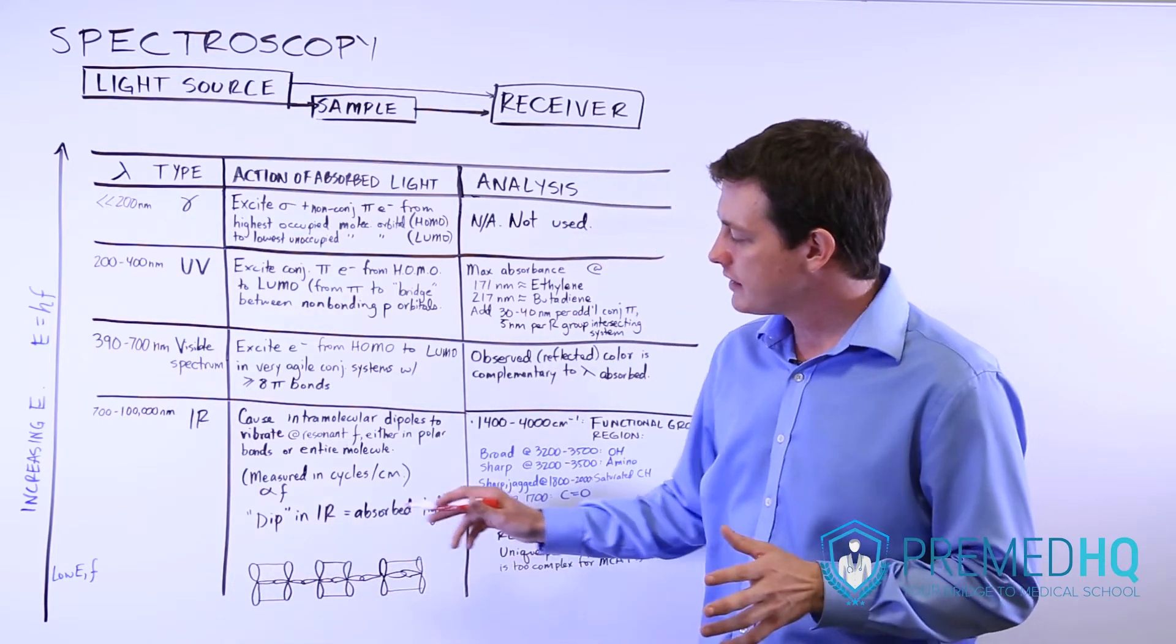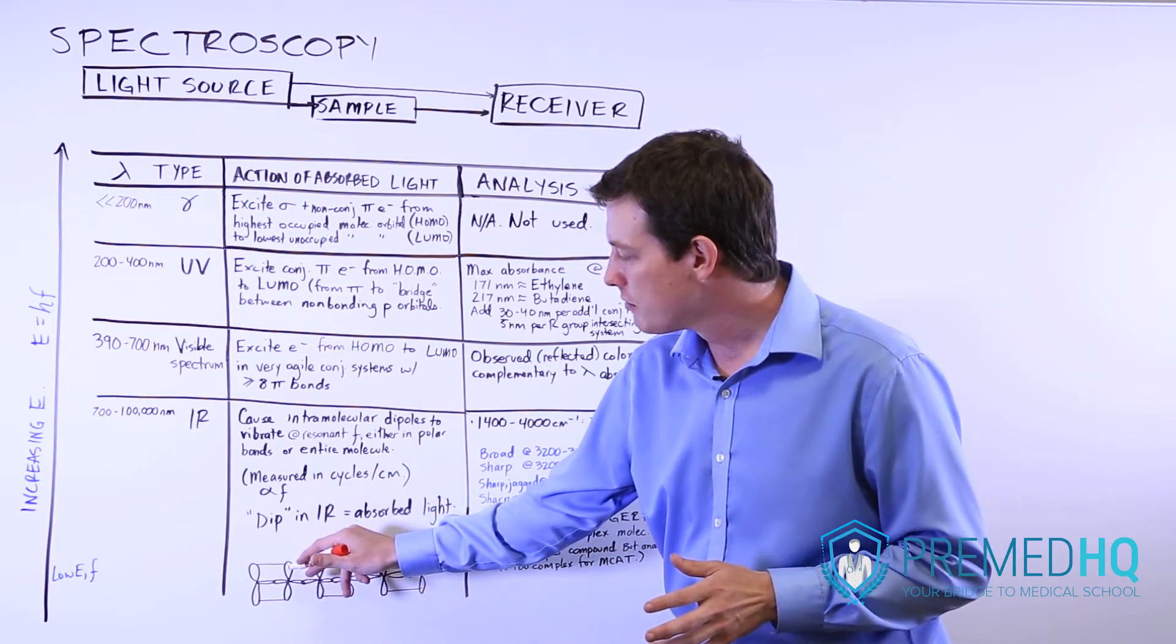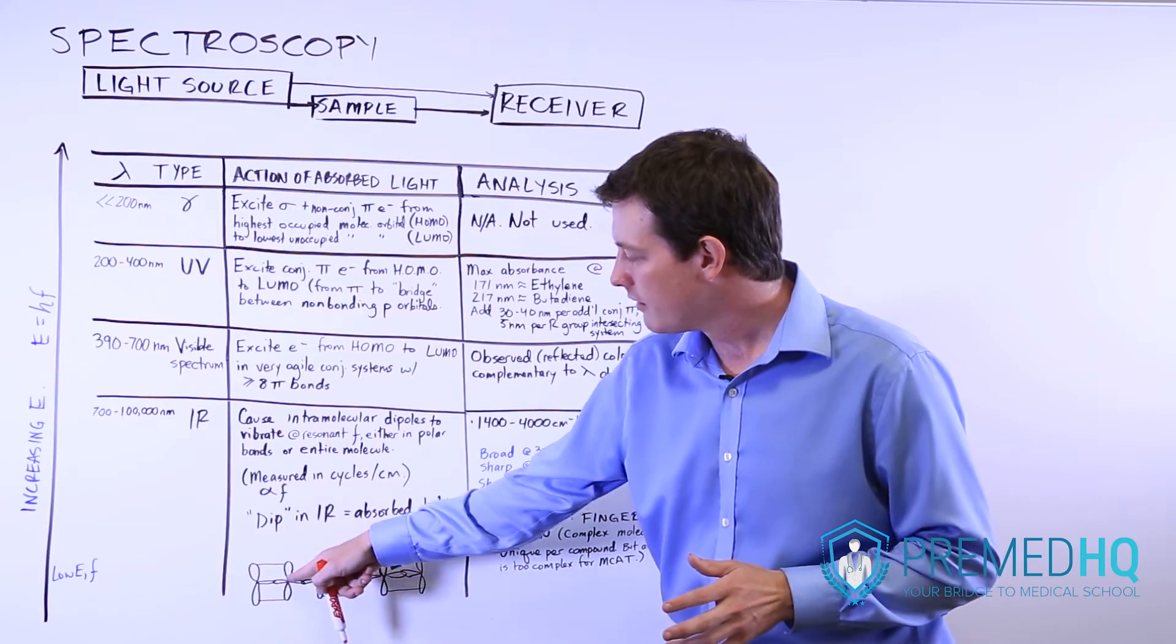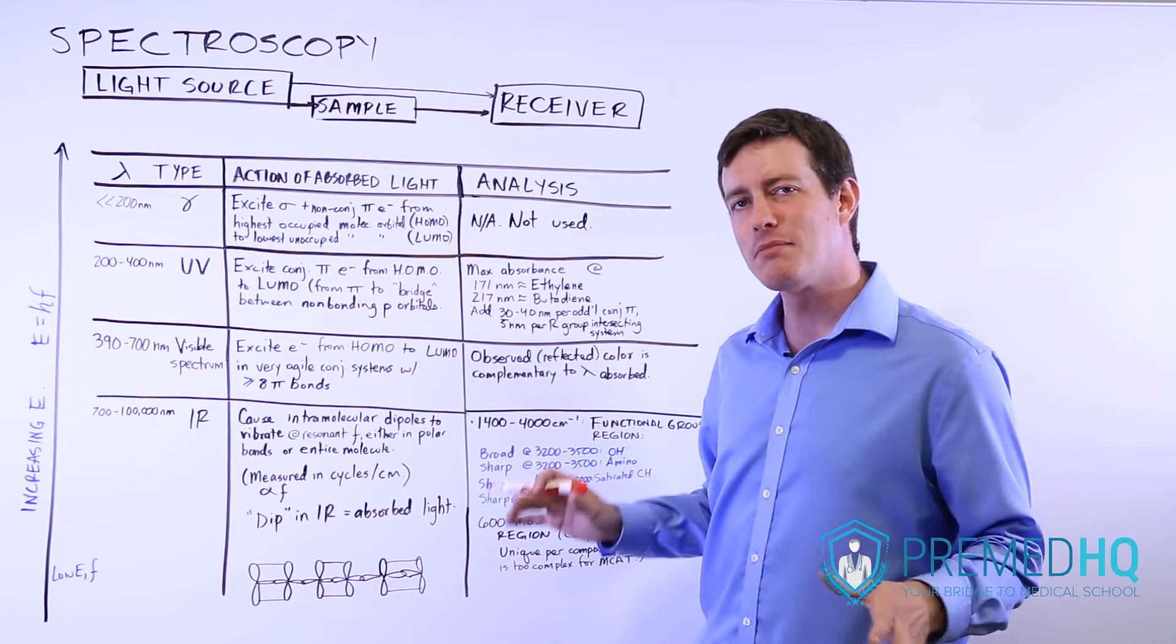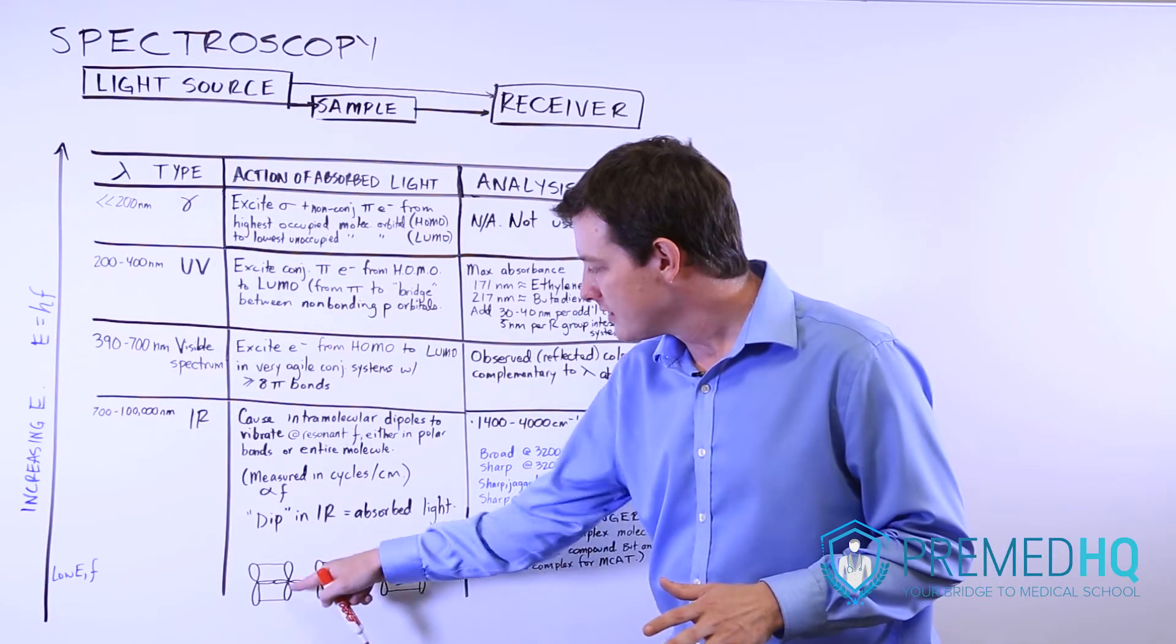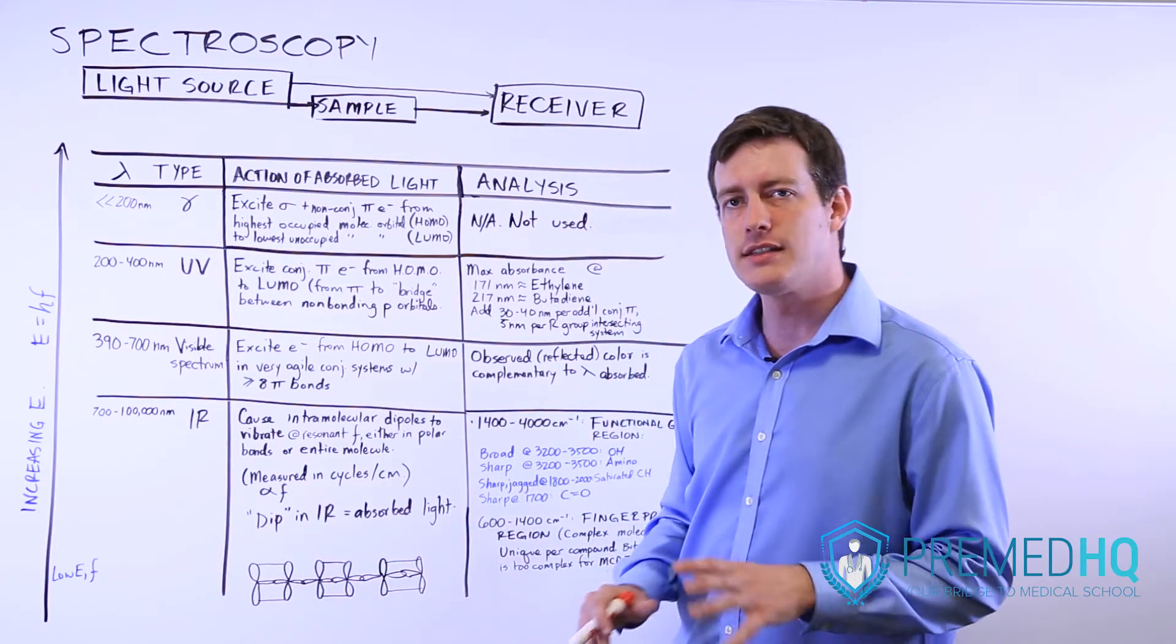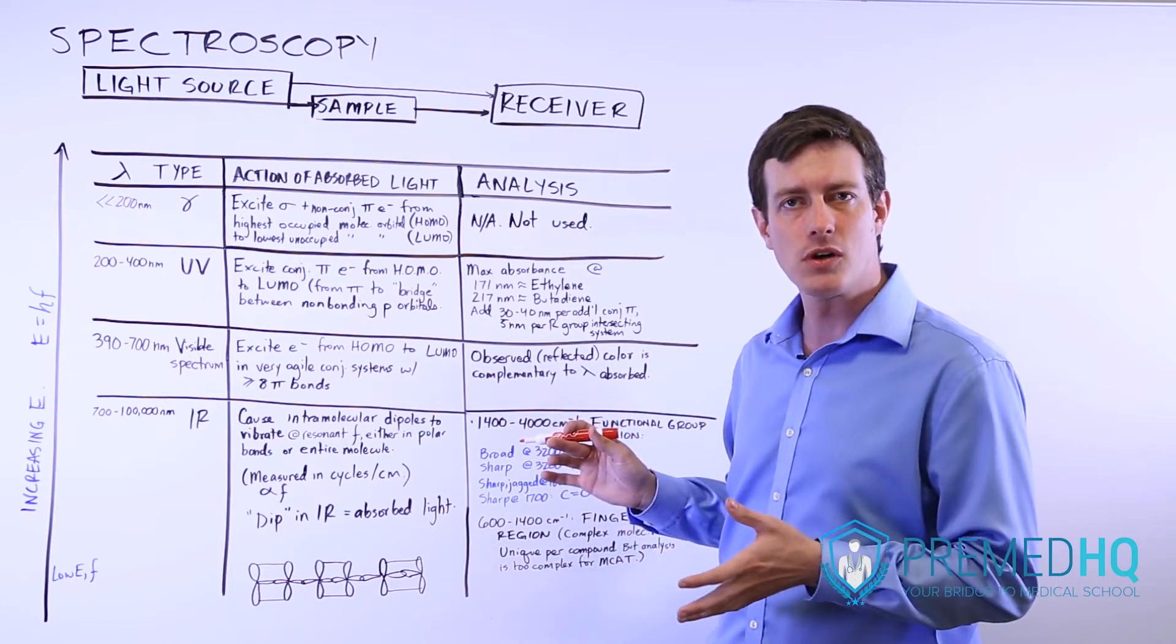And what happens is if you have a conjugated system like this, notice that you have p orbitals on adjacent carbons here. So we have a p orbital here, and we have a p orbital there, but they're not yet forming a pi bond. However, because you have adjacent carbon atoms with p orbitals that are intact, that is the potential for a pi bond to be formed.